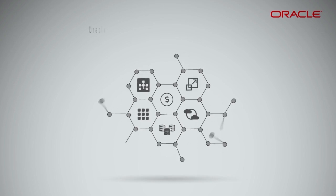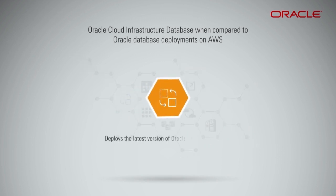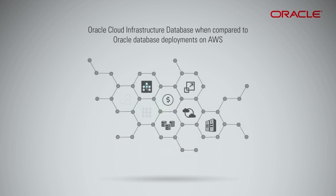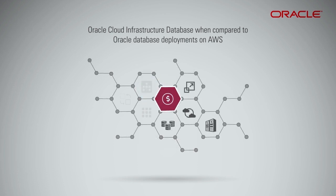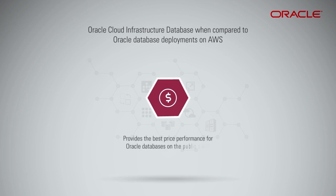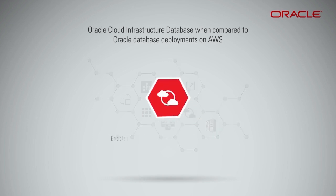Here are some of the unique advantages of Oracle Cloud Infrastructure Database when compared to Oracle Database deployments on AWS, RDS, or EC2 instances. It deploys the latest version of Oracle Database software, and all the features and options of Oracle Databases. It deploys Oracle Databases on the best cloud platform to meet and exceed the performance and availability demands of critical Oracle Database workloads, and provides the best price performance for Oracle Databases on the public cloud. It also provides the ability to use different editions of Oracle with the same licensing model and a single database support model, and enables seamless implementation and management of hybrid Oracle Database environments on-premises and on the public cloud with no vendor lock-in.